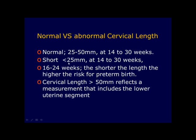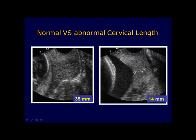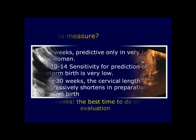Short cervical length is defined as less than 25 millimeters at these gestational ages, with the best prediction for preterm birth at 16 to 24 weeks — the shorter the length, the higher the risk. A cervical length greater than 50 millimeters reflects a measurement that includes the lower uterine segment. This is a normal cervix measuring 35 millimeters, and this is a short cervix measuring 14 millimeters. In a dilated cervix, only the closed, functional part of the cervix is measured.